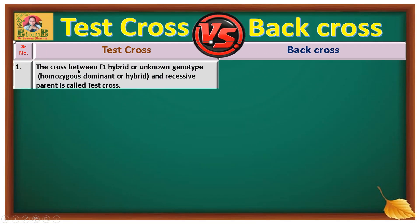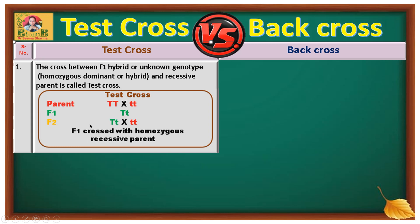First point: definition. The cross between F1 hybrid or unknown genotype and recessive parent is called a test cross. This is illustrated in this flowchart where you can see two pure line parents for one trait — when they are crossed, an F1 generation hybrid is obtained. When this hybrid is back crossed with the recessive parent, that cross is called a test cross.